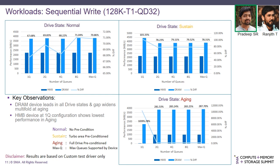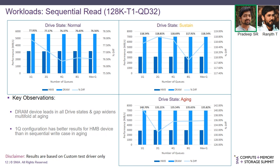Another observation is that in the aging state with the one-queue configuration, HMB performed the worst. In the case of sequential read with 128K chunk size, 1 thread, queue depth 32, when varying queues, the results are along similar lines to sequential write — the DRAM-based drive outperformed across all drive states and queue configurations. The only difference is that in the aging state, the performance gap between DRAM and HMB is not as large as in sequential write. Also, the one-queue performance for sequential read is better than for sequential write.